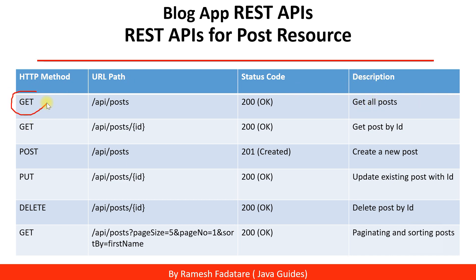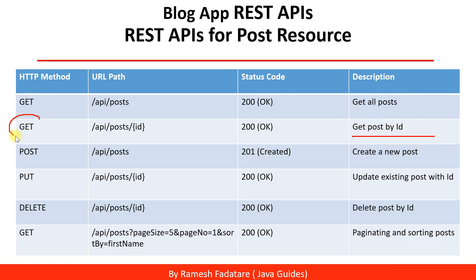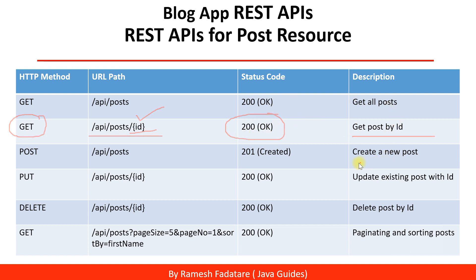For example, the Get All Posts REST API will handle the HTTP GET method, and the REST endpoint URL is /api/posts, with a status code of 200. Similarly, for Get Post By ID, this REST API will handle the HTTP GET method with the endpoint URL including an ID as a URL template variable, and the status code is 200.